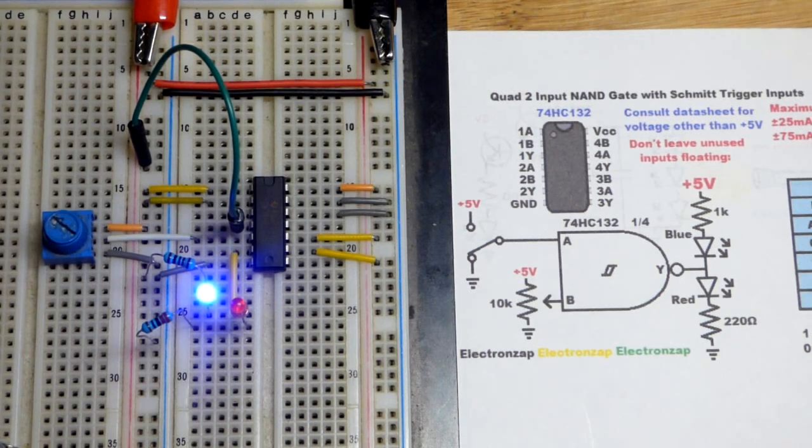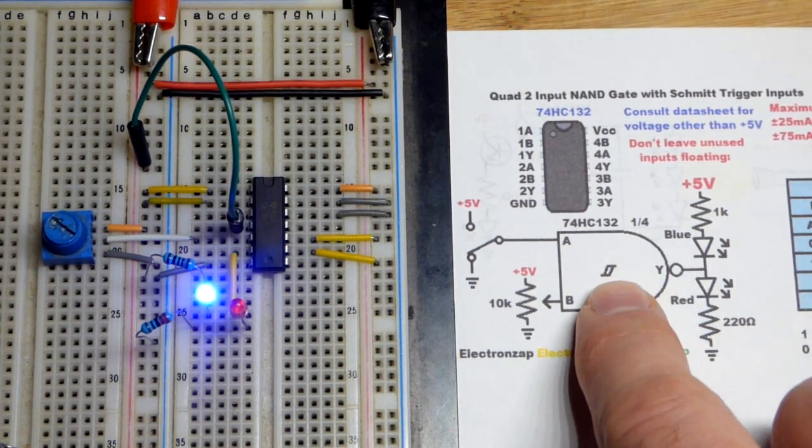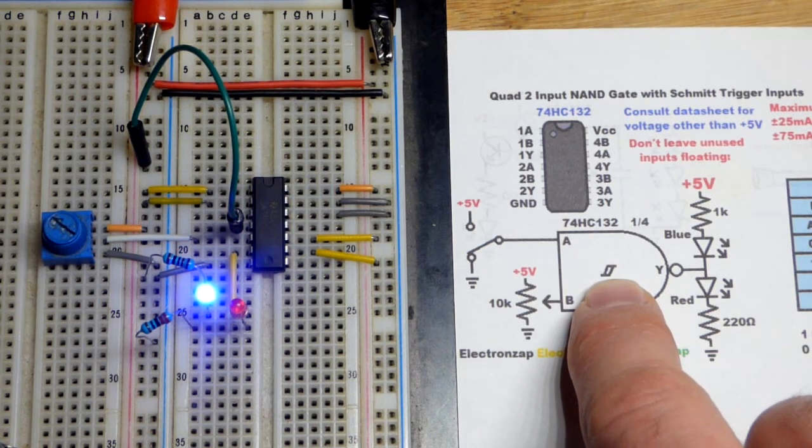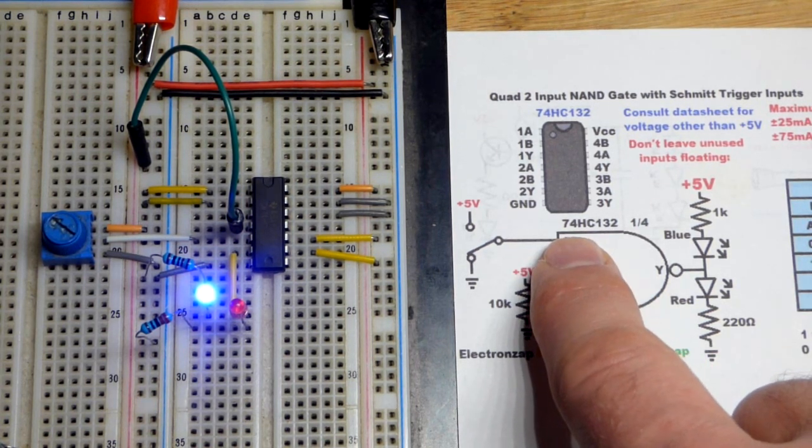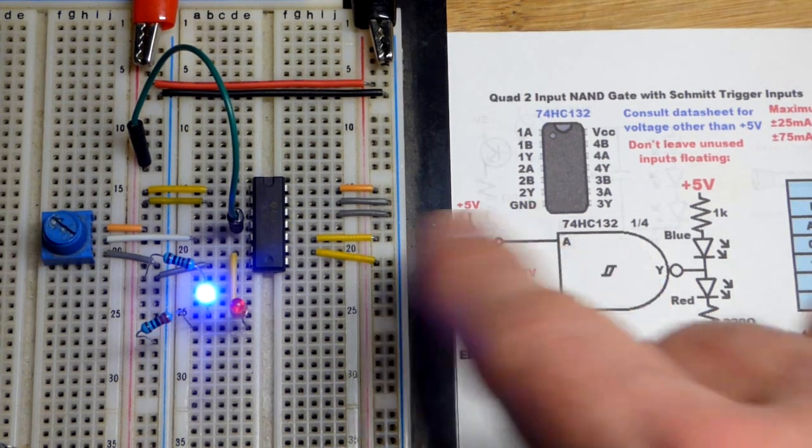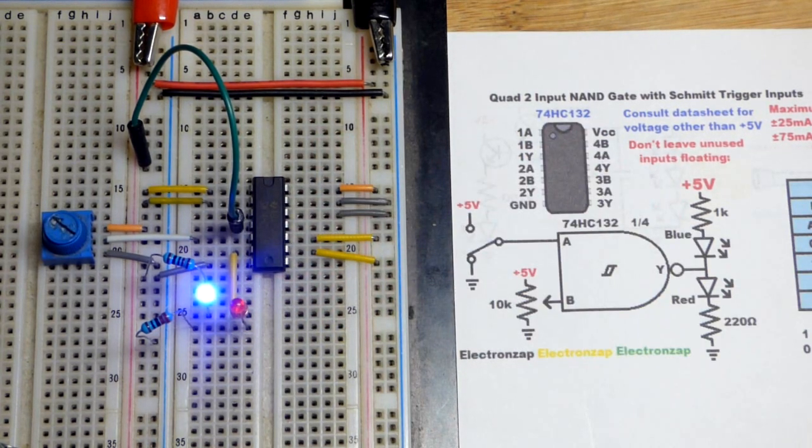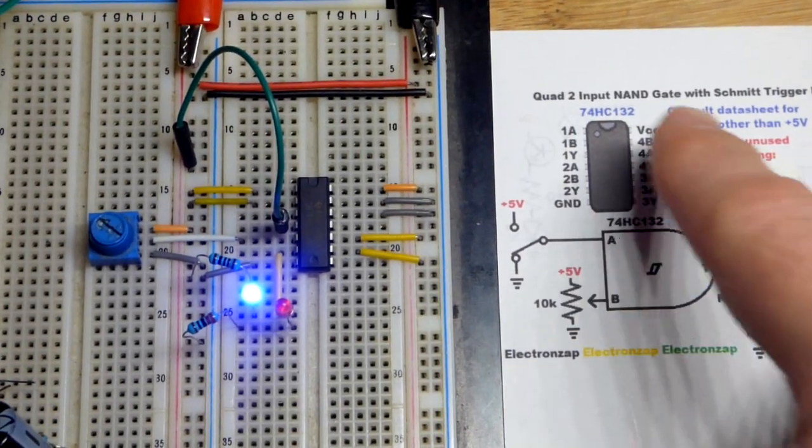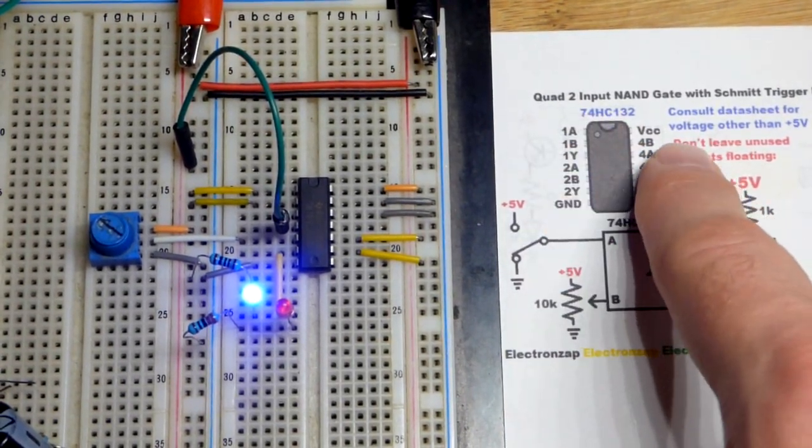So now in recent videos, we looked at NOT gates with Schmidt triggers. You can get probably every other logic gate with Schmidt triggers. So I made this diagram a while ago, but we got the 74HC132 right there.